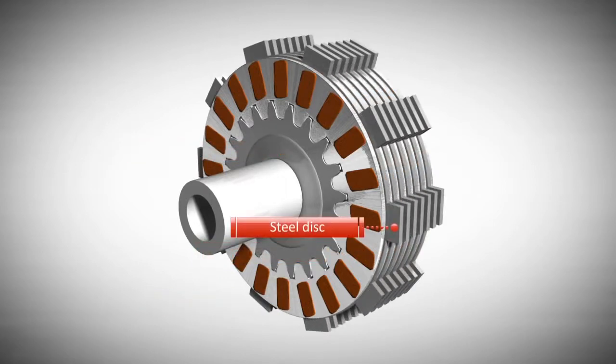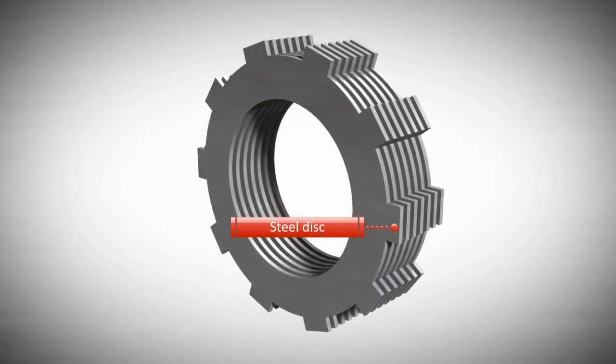Steel disks can be found between the friction disks. These steel disks sit interlocked within the basket.